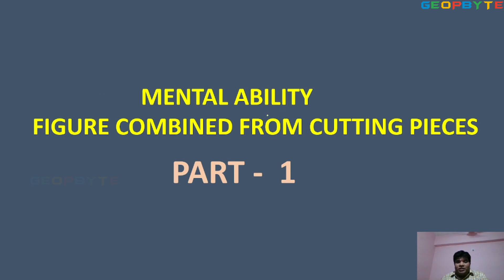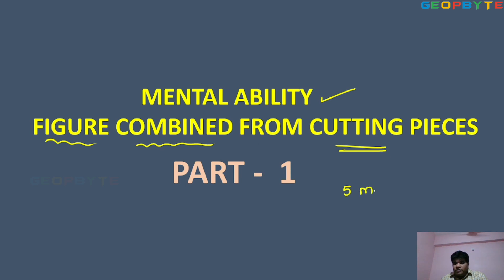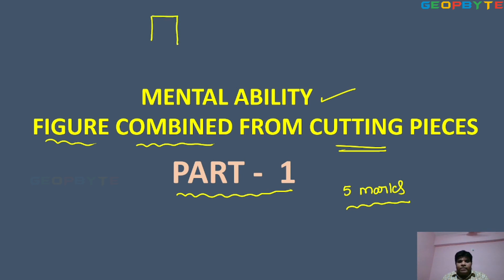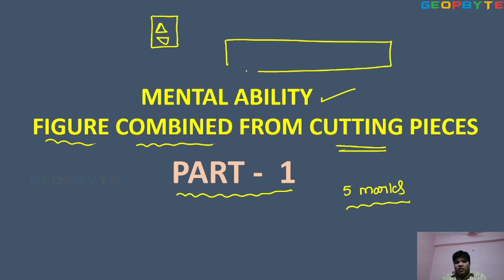Welcome to the GeoByte. Dear children, today we cover the mental ability concept: figure combined from the cutting pieces. This topic carries 5 marks and is one of the easiest topics. Simply put, what is the figure combined from cutting figures? In that box, two triangles are given, and by combining these two triangles we get the complete figure. In which option is that figure existing? That is the question format.